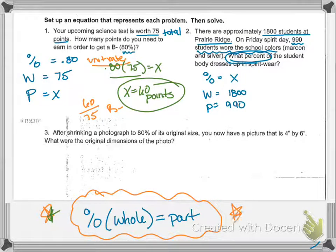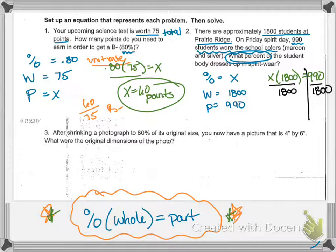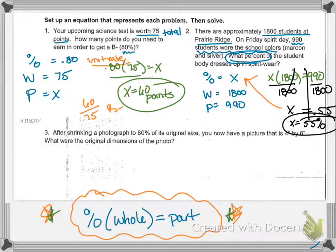Again, I'm going to plug all that information into my formula here. So I have the percent times the whole amount equals the part, and this time it's not as easy. X is not by itself, so I'm going to have to solve this equation. I'm going to do the opposite, divide by 1,800 on both sides. So I'm left with 0.55. Now that doesn't quite make sense to me, but let's look back at what they were asking me for. They're asking me for a percent. So I'm going to convert that to a percent, which is 55%. Now it makes sense. 55% of the student body wore spirit wear on that Friday.